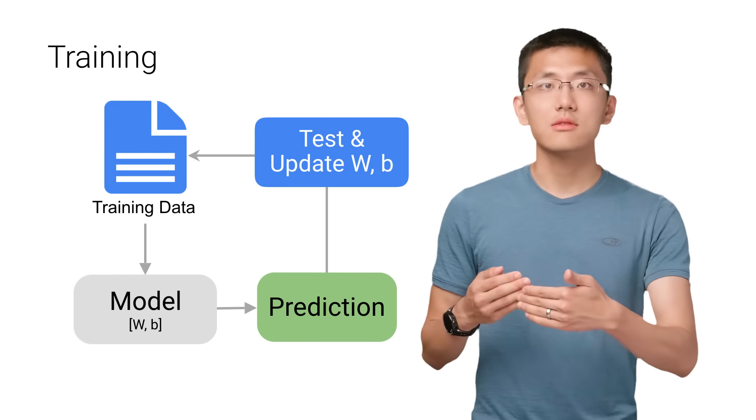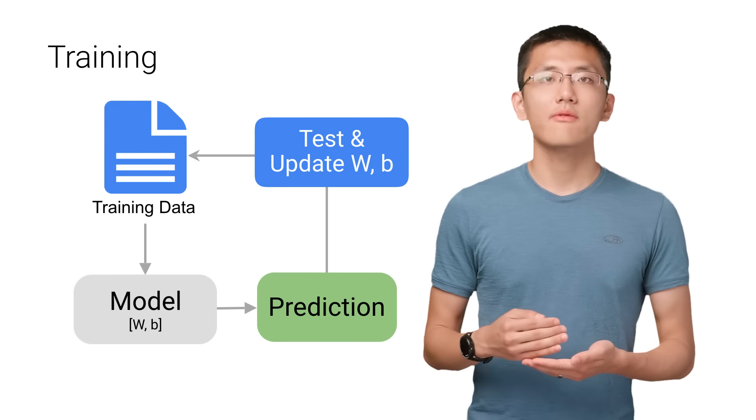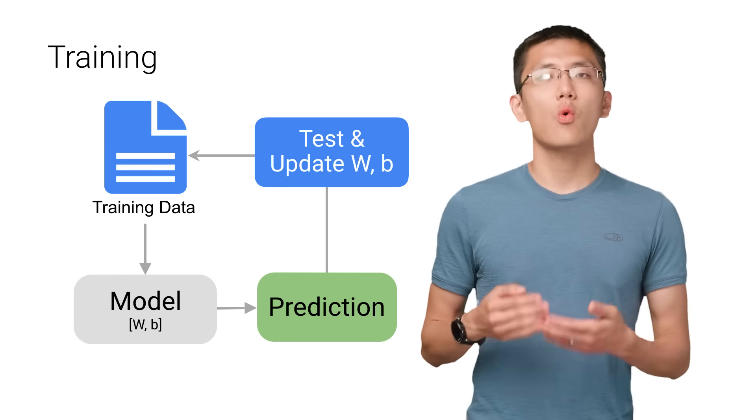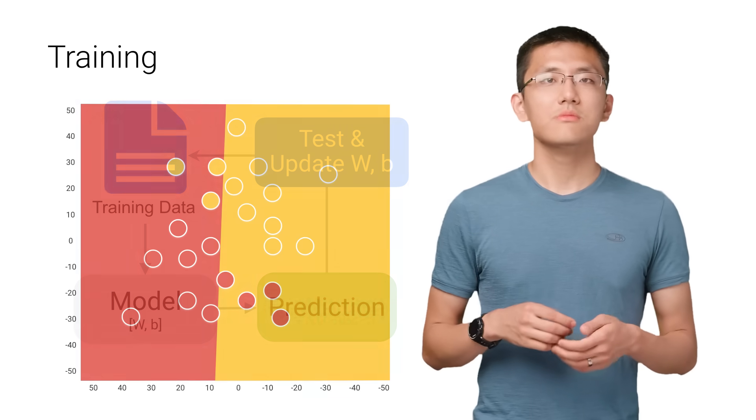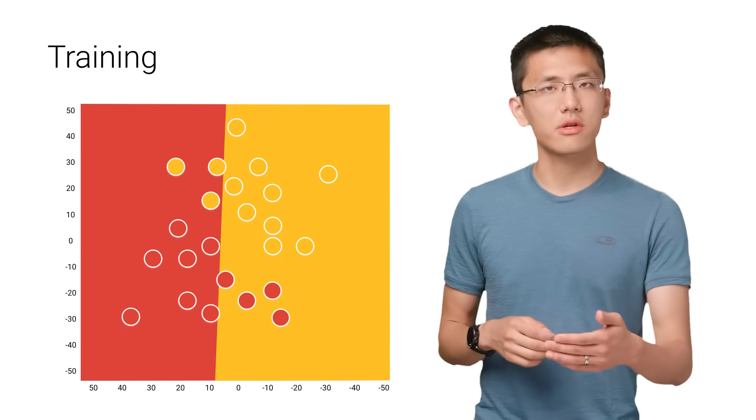So this process then repeats. Each iteration or cycle of updating the weights and biases is called one training step. So let's look at what that means more concretely for our dataset.